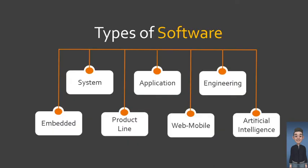I would like to present to you the different types of software. In this course, let us use the classification given by Prismet. So if we will check on the slides, we have system software, application software, engineering or scientific software, embedded software, product line, web or mobile software, and artificial intelligence.